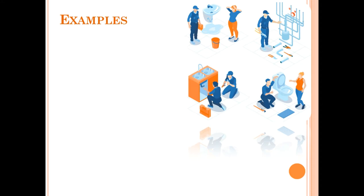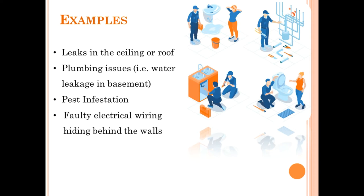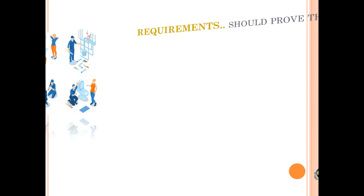Examples of latent defects include: leaks in the ceiling or roof, plumbing issues, pest infestation or mold, electrical wiring hidden behind walls, and defects to the clutch in a lawn mower.